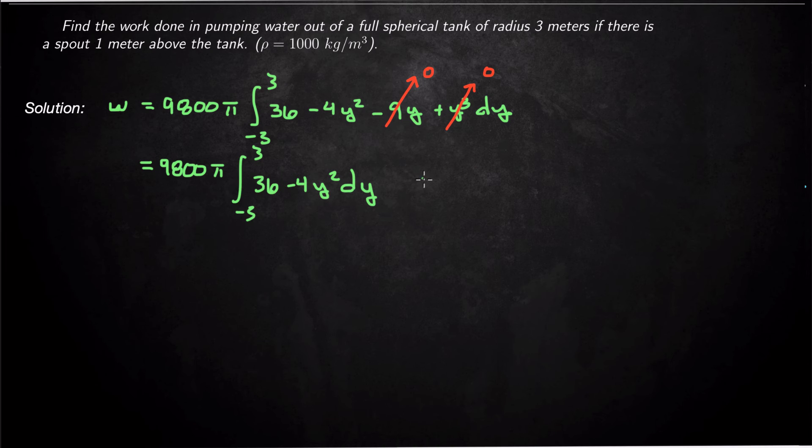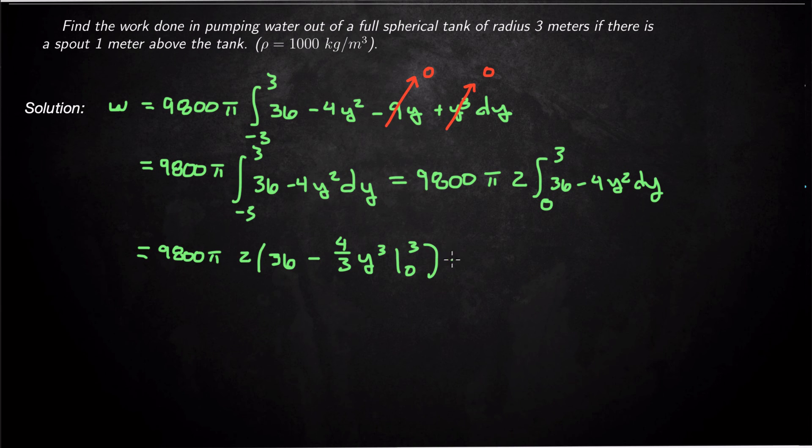And so we're left with 9,800 π integral -3 to 3, 36 - 4y² dy. And actually this is now an even function. So what I can do is I can say that that's 9,800 π times 2 integral 0 to 3, 36 - 4y² dy. And I'll just integrate those. And so we'll get 9,800 π times 2 and then 36y - 4/3 y³ from 0 to 3. And we could rewrite that again as 9,800 π times 72y minus, I'm bringing that 2 inside, so that would be 8/3 y³ from 0 to 3.